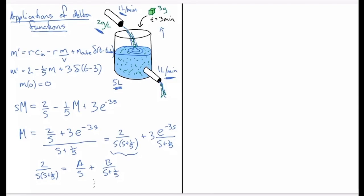Then we calculate the A and B from that partial fraction decomposition. The other term, this one here—3e to the minus 3S divided by S plus 1 over 5—that's of the form e to the minus 3S times F of S. And we know that that inverse transforms to f of t minus 3 times u_3 of t. So this guy is going to transform back to 3.